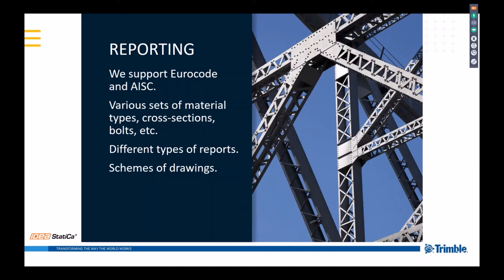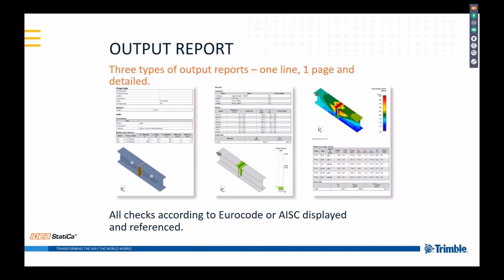We support Eurocode and the US code, with more codes to be added. We gradually improve and add various material types, cross-sections, and bolts, with different types of reports, and also produce schemes and drawings. It is important to show all references to the code. This is code-checking software, so it comes down to answering: is it safe? Is it buildable? Is it okay by the code? We display all checks defined by Eurocode or the US code with a clear pass answer, and you can look into the actual calculations and formulas. Three levels of report will be shown live.